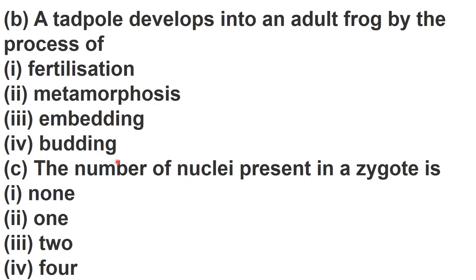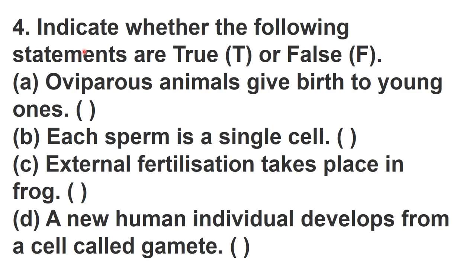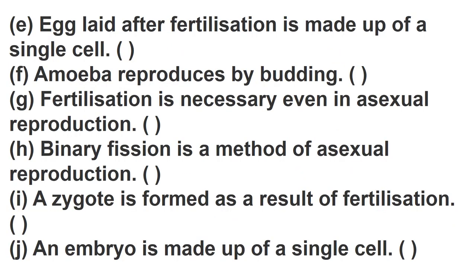Question 4: Indicate whether the following statements are true or false — oviparous animals give birth to young ones; each sperm is a single cell; external fertilization takes place in frog; a new human individual develops from a cell called gamete; egg laid after fertilization is made up of a single cell; amoeba reproduces by budding.